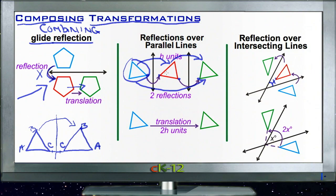So if we go from blue to red by going four units and then from red to green by going four units, we could have just gone from blue to green by going eight units. So an h unit reflection over two parallel lines is the same as a 2h unit slide.